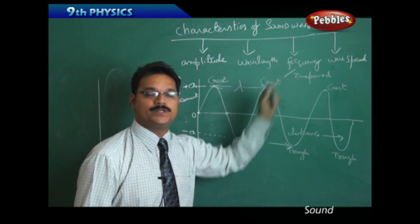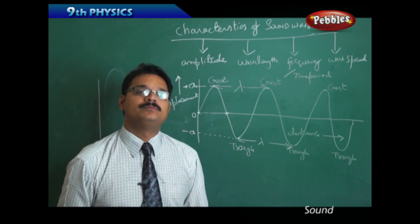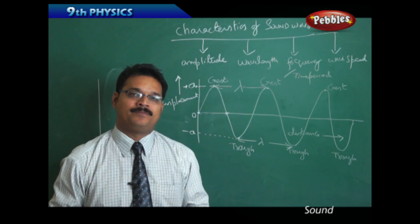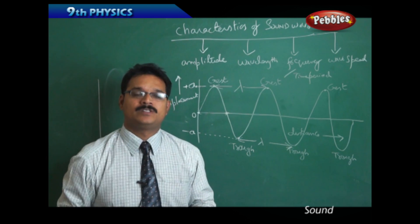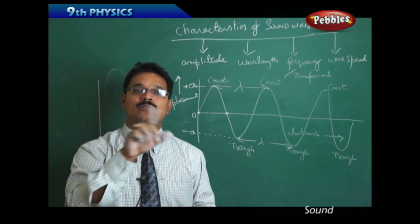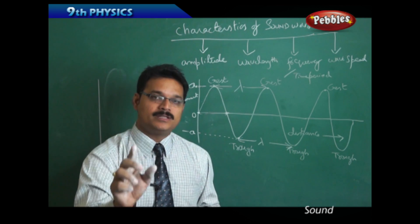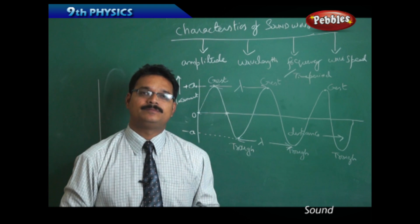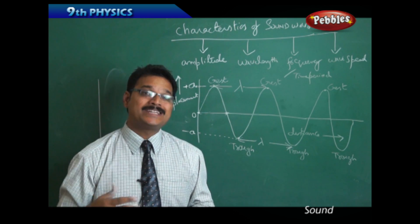Next we discuss frequency. Suppose you switch on the fan in your room, take a stopwatch, identify one blade of your fan, put the fan on low speed. Suppose using the stopwatch you find that for 30 seconds one particular blade revolves 30 times. So in 30 seconds the blade revolves 30 times, then we can say that its frequency is one revolution per second.